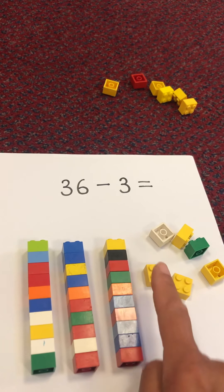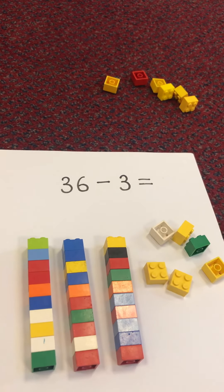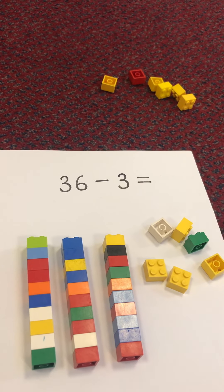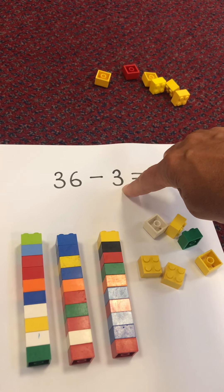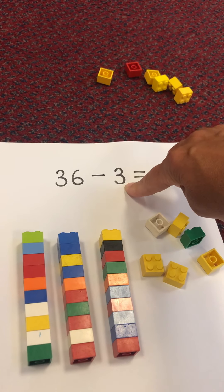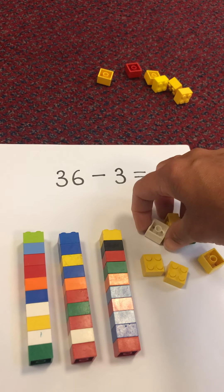Ten, twenty, thirty, thirty-one, thirty-two, thirty-three, thirty-four, thirty-five, thirty-six. Now, how many do I need to take away? Is that three tens? No, you're right. It's a single digit number, so it means three ones. Let's take our three ones away.